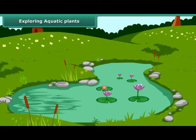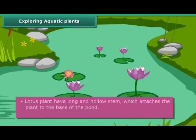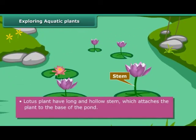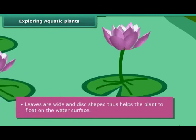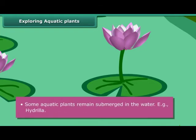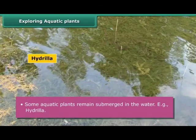You might have seen lotus floating in ponds and lakes. These plants show various adaptations to live in water. Lotus plants have a long and hollow stem which attaches the plant to the base of the pond. Roots are short. Leaves are wide and disc-shaped, which helps the plant to float on the water surface. Some aquatic plants remain submerged in water, for example, hydrilla.